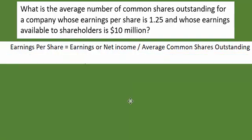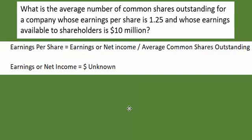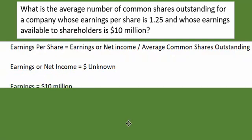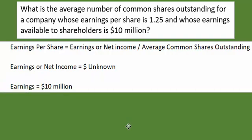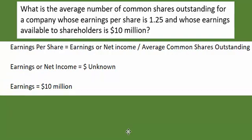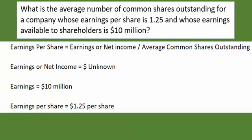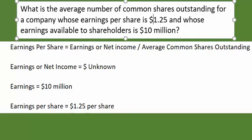So let's slide down. What we know is earnings, or net income: earnings are equal to $10 million. And earnings per share is $1.25 per share — this really should have a dollar sign in front of it.